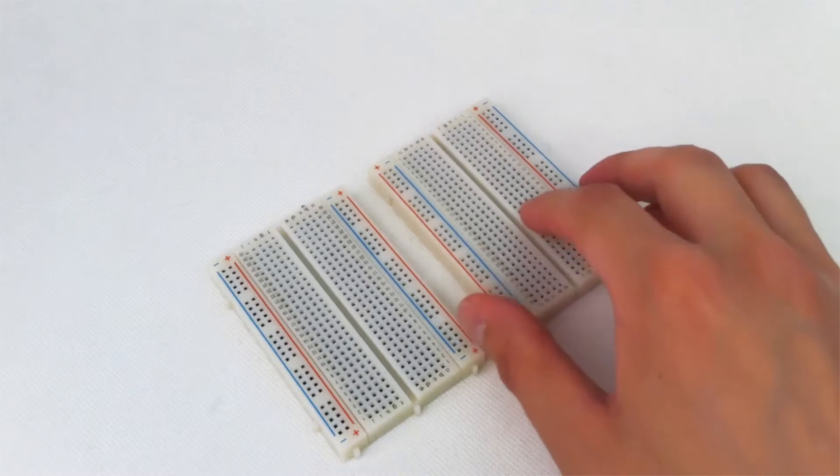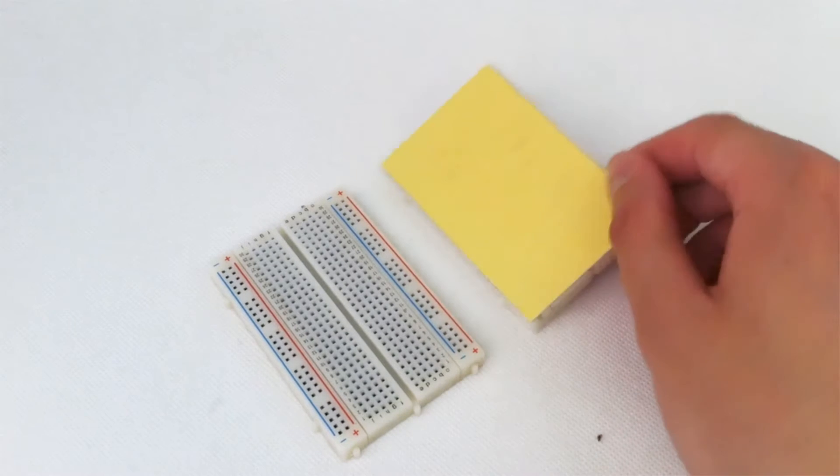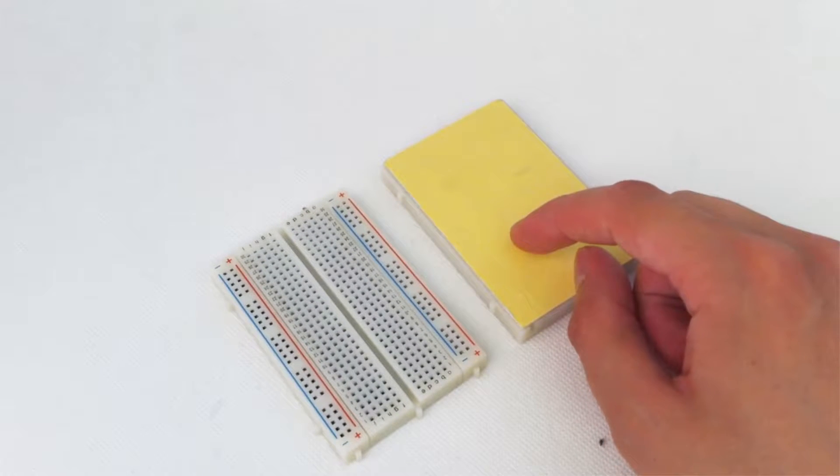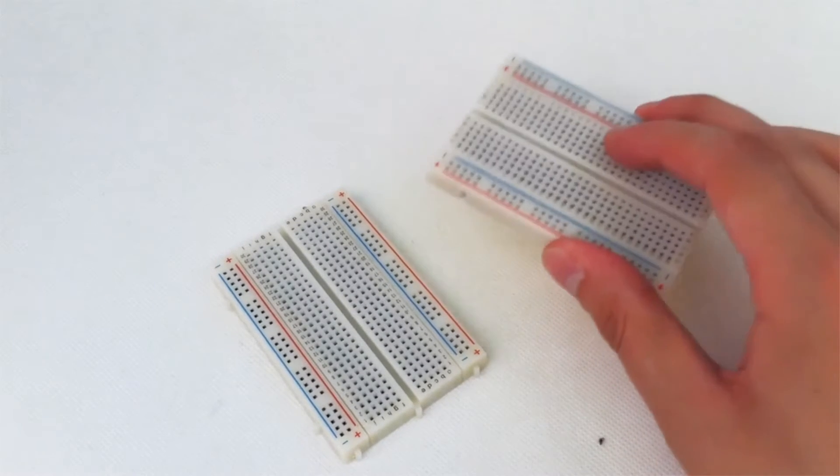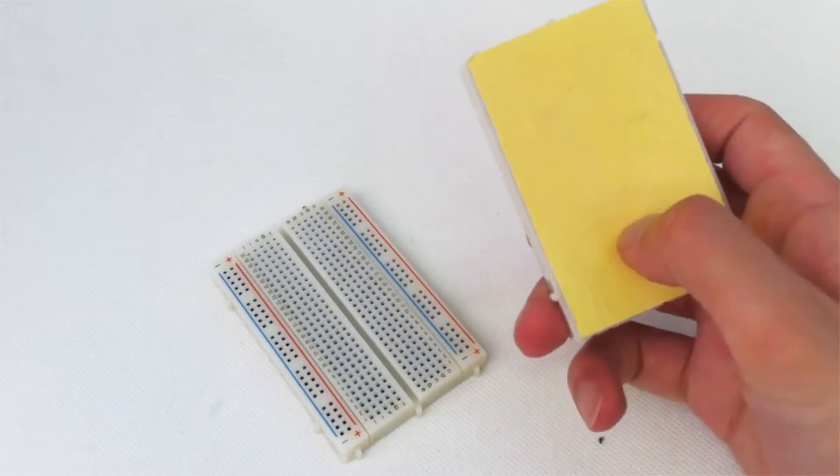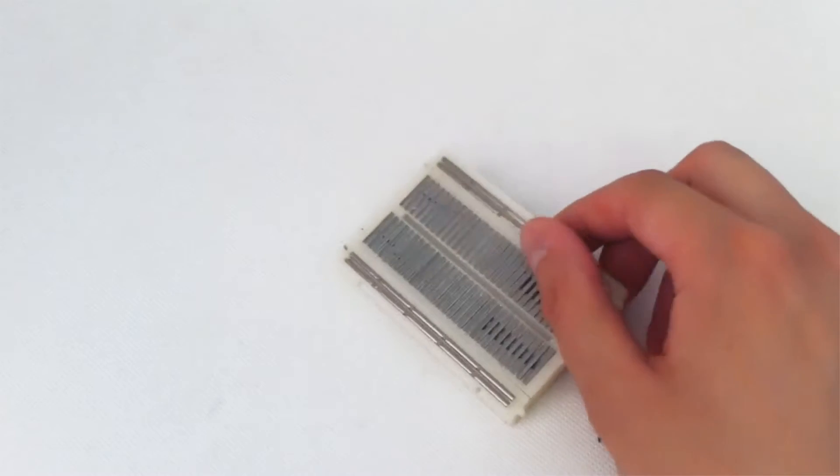How does a breadboard actually work? Well if we can turn it over like this we can see it has this yellow adhesive backing and this is useful if we want to stick the breadboard down for our projects. If we remove the backing then we're left with something that looks like this.